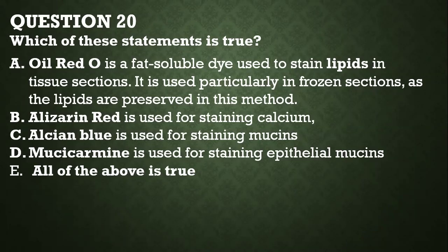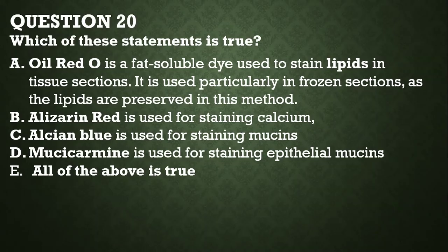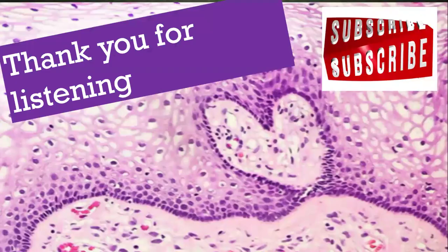Question twenty, the last: which of the following statements is true? Oil Red O is a fat-soluble dye used to stain lipids in tissue sections — it is particularly useful in frozen sections because lipids are preserved in this method. Alizarin red is used for staining calcium — true. Alcian blue is used for staining mucins — true. Mucicarmine is used for staining epithelial mucins. All of the above are true.